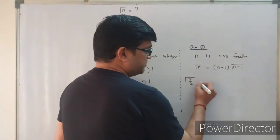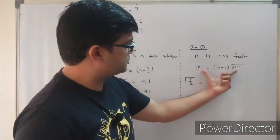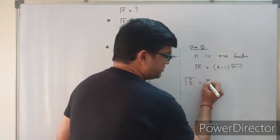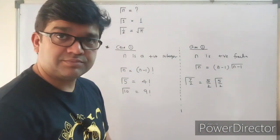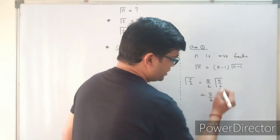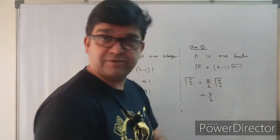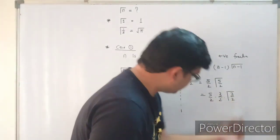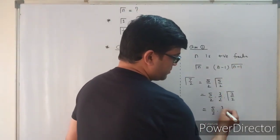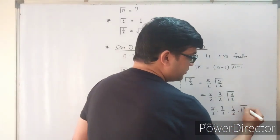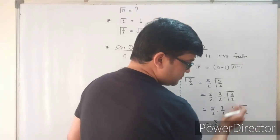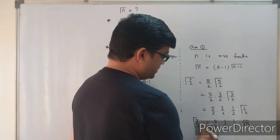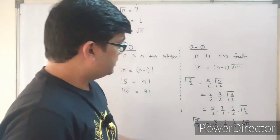For example, Γ(7/2): since 7/2 is a positive fraction, apply the recurrence formula. Γ(7/2) = 5/2 · Γ(5/2) = 5/2 · 3/2 · Γ(3/2) = 5/2 · 3/2 · 1/2 · Γ(1/2). Since Γ(1/2) = √π, we end up with 5/2 · 3/2 · 1/2 · √π. This technique is called the recurrence formula.